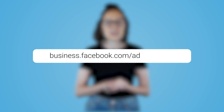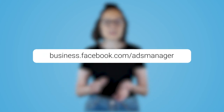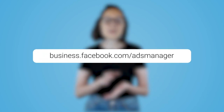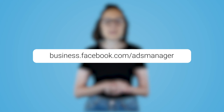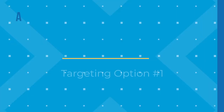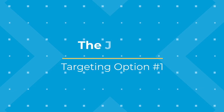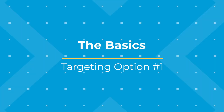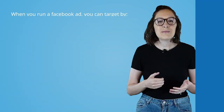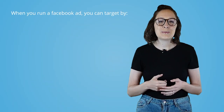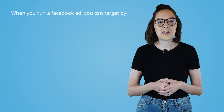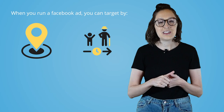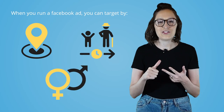Let's head to business.facebook.com/ads manager to get to our Facebook Ads Manager and jump into the first set of targeting options that, for the sake of this video, I'm going to call the basics. At minimum, when you run a Facebook ad, you can target by location, age, and gender.